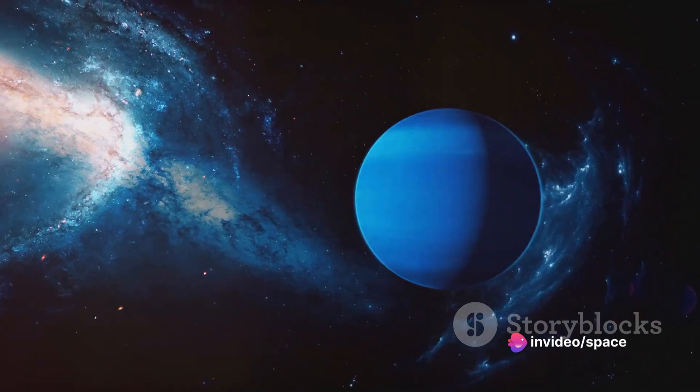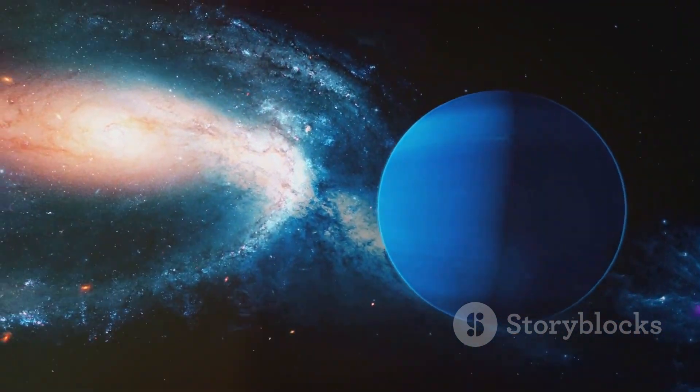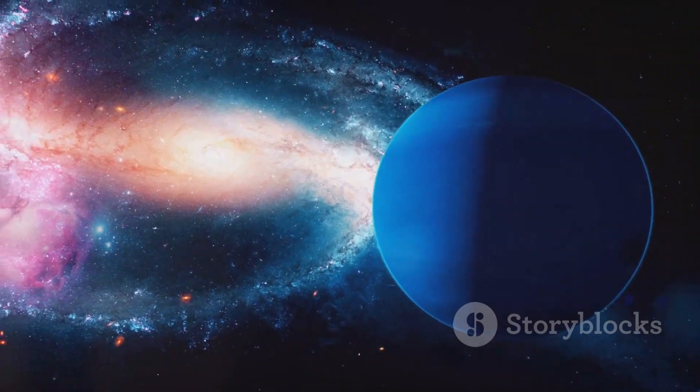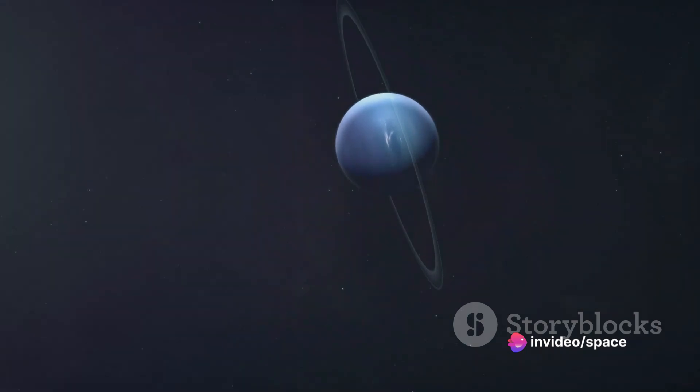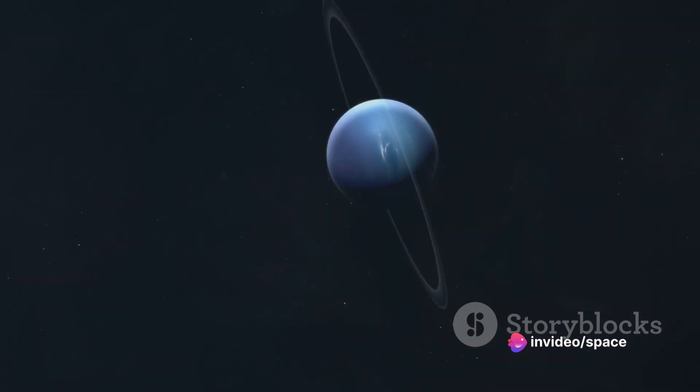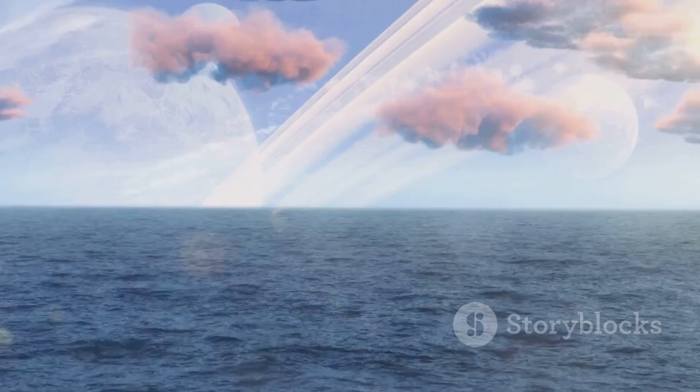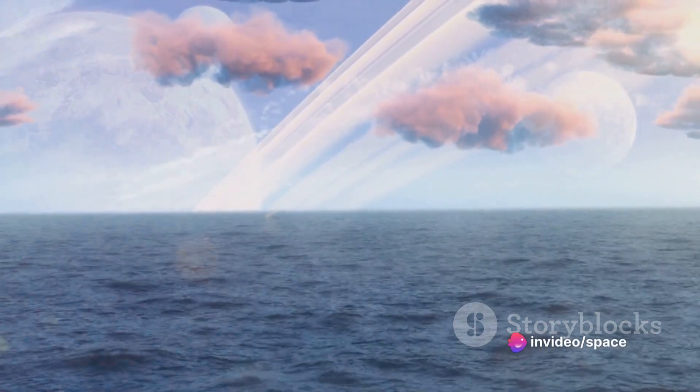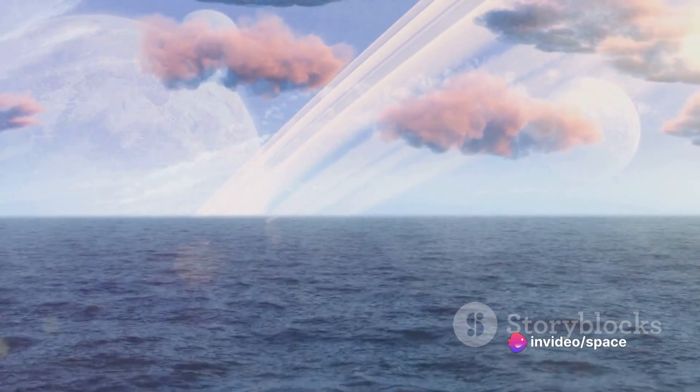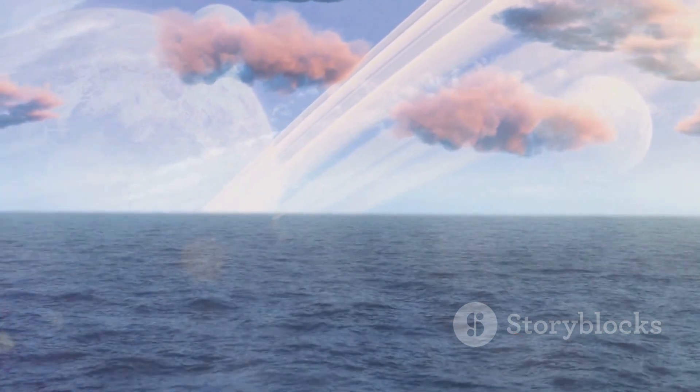In terms of the planet's potential for life, the jury is still out. Kepler-22b is located in the habitable zone of its star, where conditions could be just right for liquid water to exist on its surface. This is a key ingredient for life as we know it. But the presence of water is still a hypothesis, not a confirmed fact. Moreover, the planet is about two and a half times the size of Earth, which raises questions about its composition. Is it a rocky planet like Earth or a gaseous one like Neptune? Scientists are still trying to figure this out.